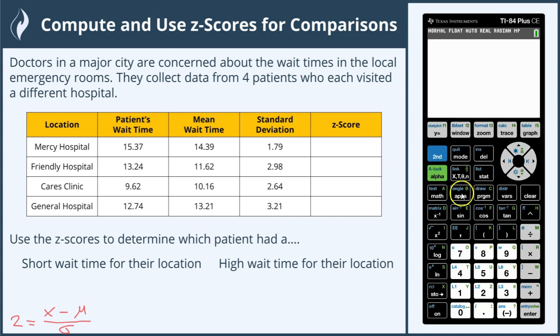We're going to use our calculator to do each one of these. We'll click alpha and then Y equals to get our fraction notation, then type in our value minus the mean, and arrow down to type in our standard deviation.